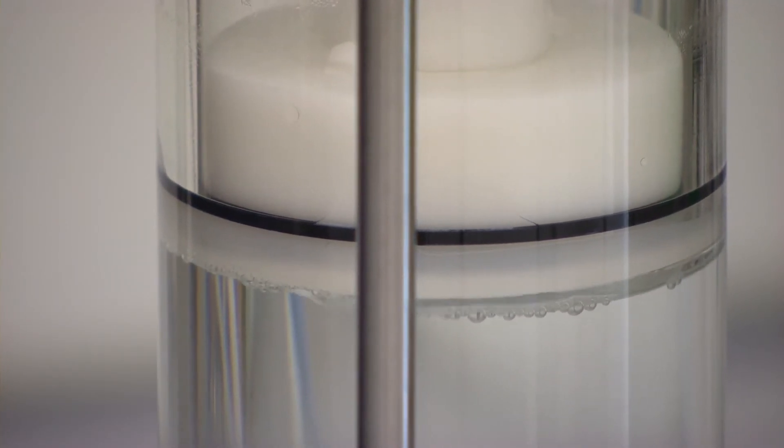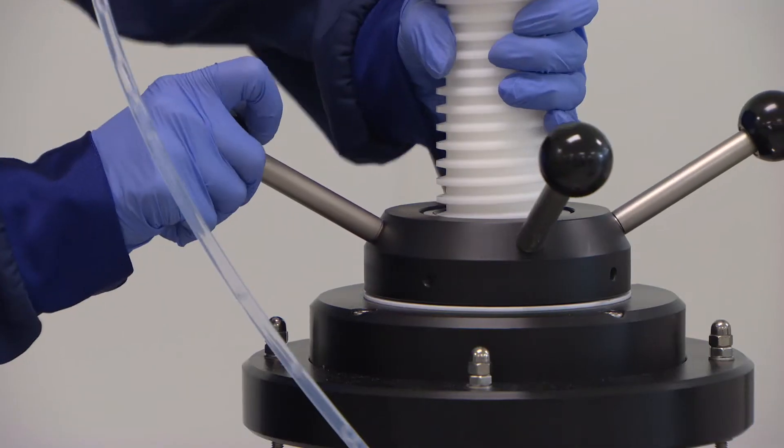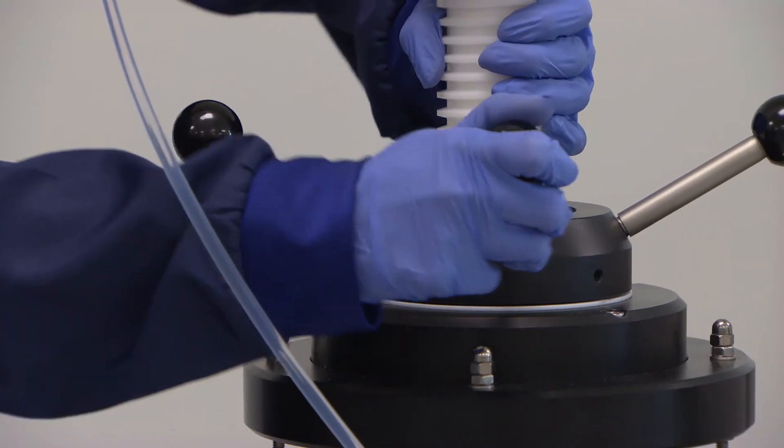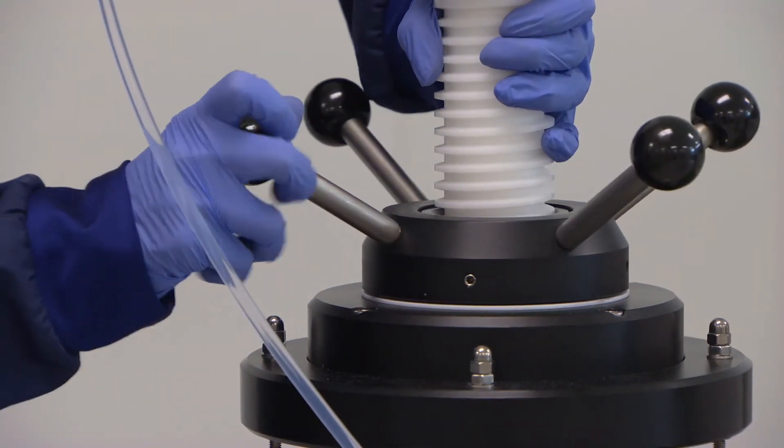As the operator lowers the top bed support, trapped air can be observed to move through the line. The piston is lowered until the line coming from the top of the column is free of any bubbles.